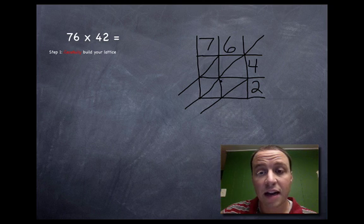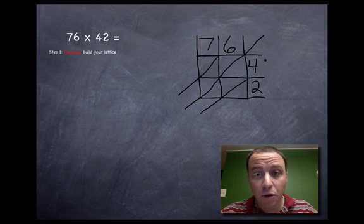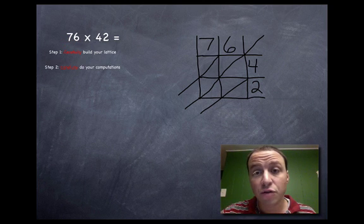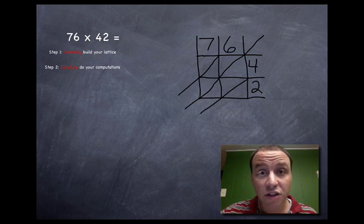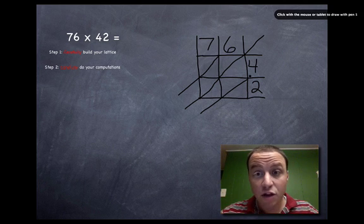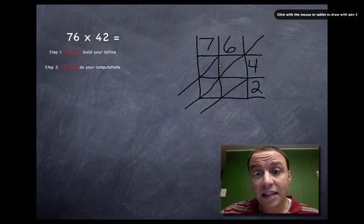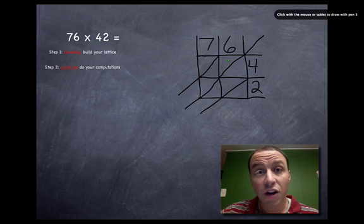Step one in the books. Step two: carefully do your computations. You're going to have to do a whole bunch of computations here, and you better do them carefully. I'm going to do this in a different color. What you're going to do is in these boxes, you're going to answer the computation for the numbers that intersect.